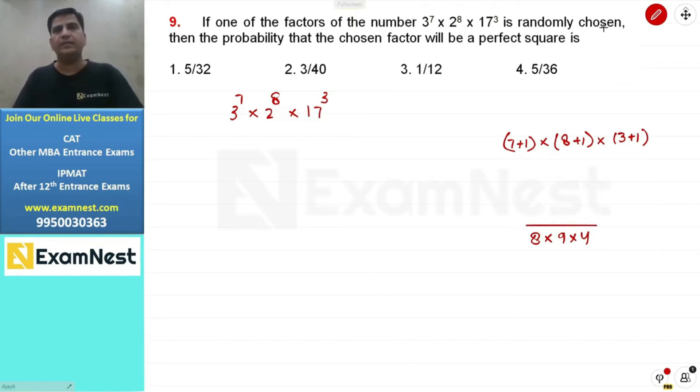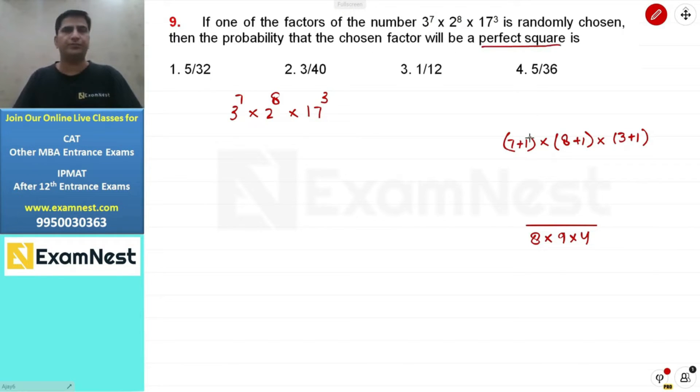If one of the factors is randomly chosen, what is the probability that the chosen factor will be a perfect square? We want to find the probability that the factor is a perfect square.